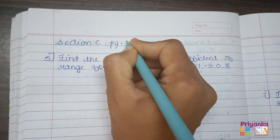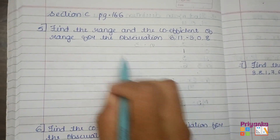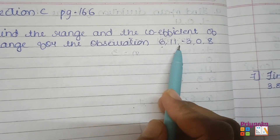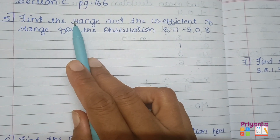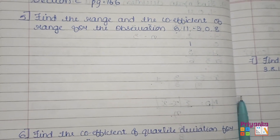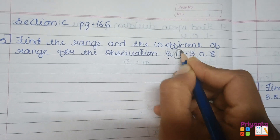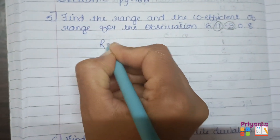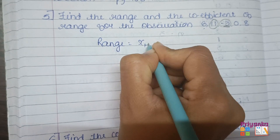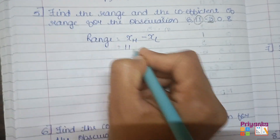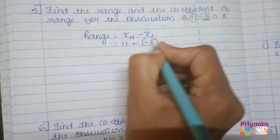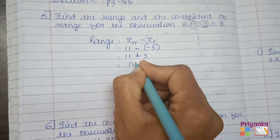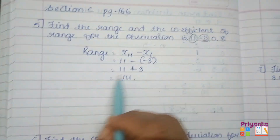Moving to Section C, starting from page 166. Question 5: find the range and coefficient of range for the observations 6, 11, -3, 0, 8. To find the range, we need the highest and lowest observations. Range = highest minus lowest = 11 minus (-3) = 11 plus 3 = 14.